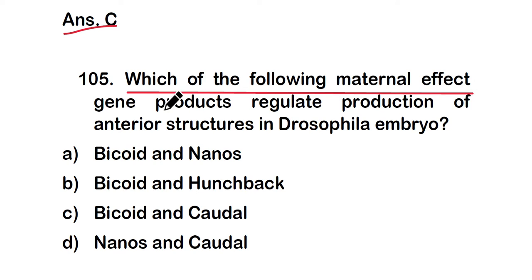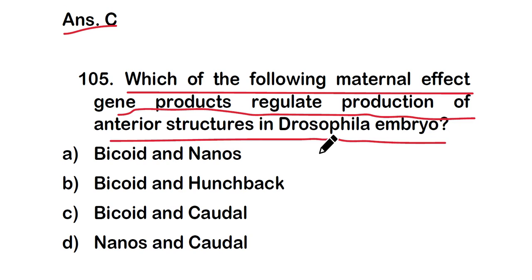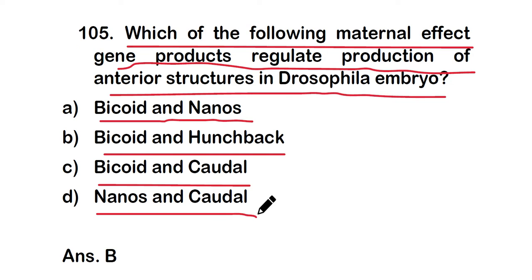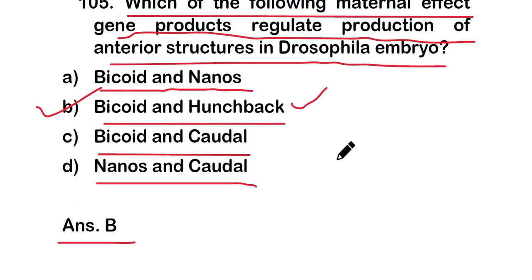Question 105: Which of the following maternal effect gene products regulate production of anterior structures in Drosophila embryo? (a) bicoid and nanos, (b) bicoid and hunchback, (c) bicoid and caudal, or (d) nanos and caudal. The correct answer is option B — bicoid and hunchback genes are the maternal effect gene products that regulate production of anterior structures in Drosophila embryo.